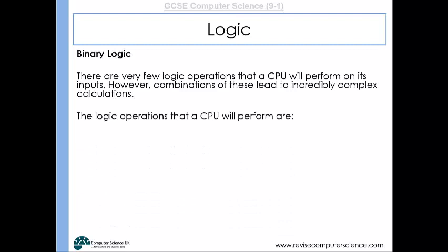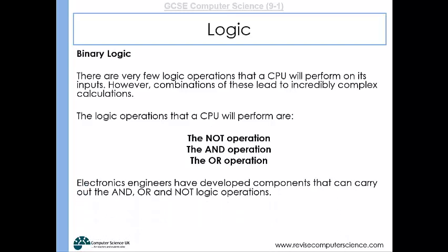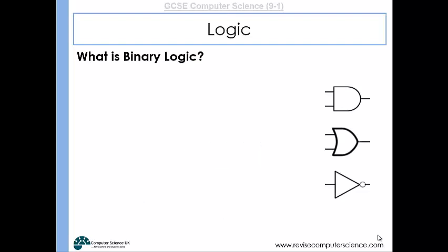The logic operations that a CPU performs are the NOT operation, the AND operation, and the OR operation. There are a few others, but you don't need to know about them for GCSE. Electronic engineers developed components that carry out the AND, OR, and NOT logic operations, and the CPU is full of millions and millions of them all arranged in different combinations. So let's have a look at how CPUs make these logical decisions.